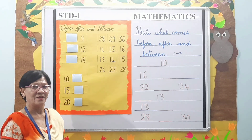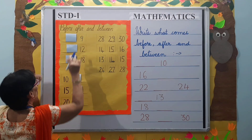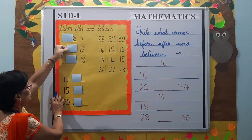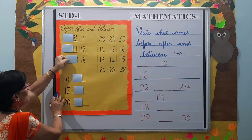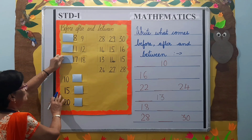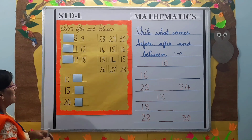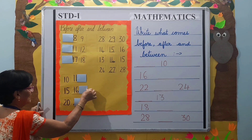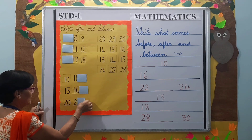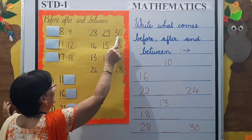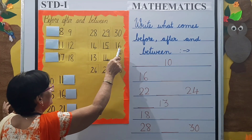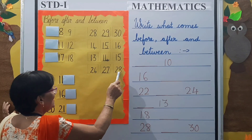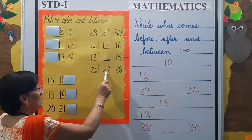Now children, what comes before 9? — 8. What comes before 12? — 11. What comes before 18? — 17. What comes after 10? — 11. What comes after 15? — 16. What comes after 20? — 21. Now between numbers: 28–30 is 29, 14–16 is 15, 13–15 is 14, 26–28 is 27.